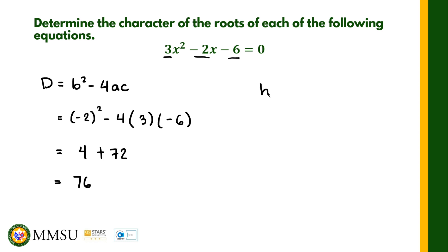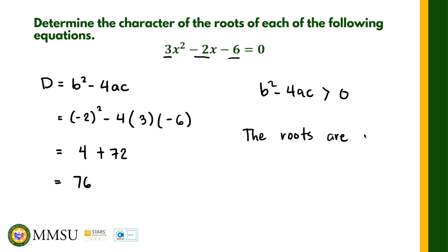Therefore b squared minus 4ac equals 76, which is greater than zero. Since the discriminant is positive, the two roots are real and they are also unequal. So we have two real and unequal roots. Let us take a look at another example.